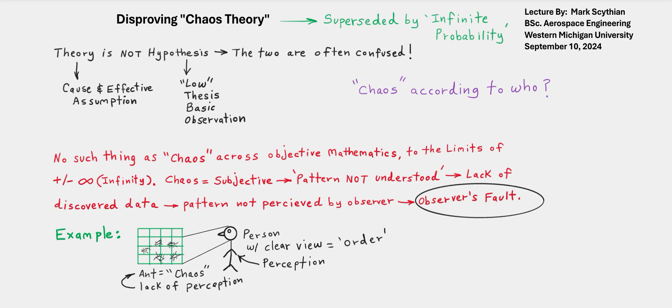There is no such thing as chaos across objective mathematics to the limits of positive and negative infinity. Chaos is subjective and described as pattern not understood, lack of discovered data, pattern not perceived by observer.